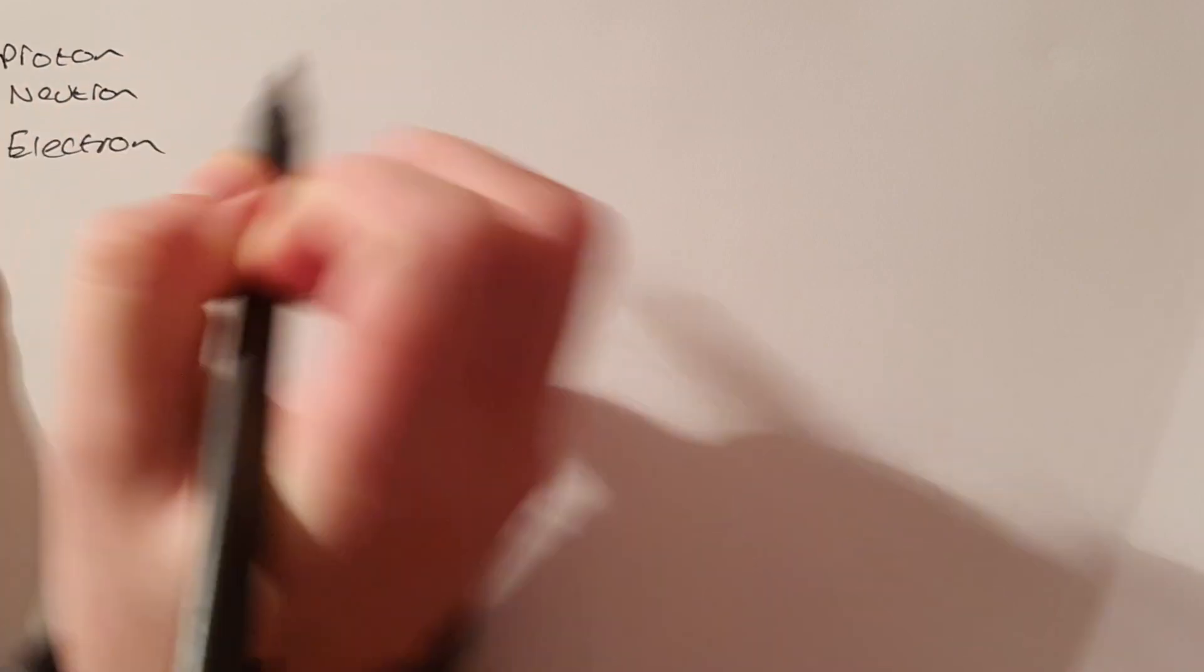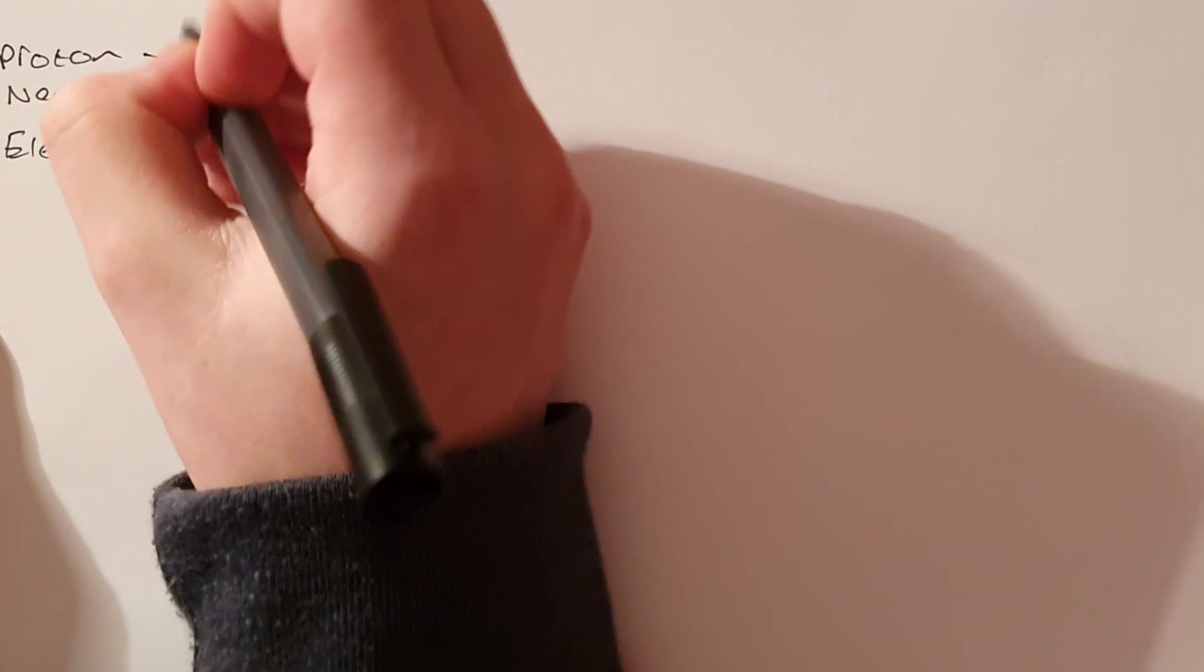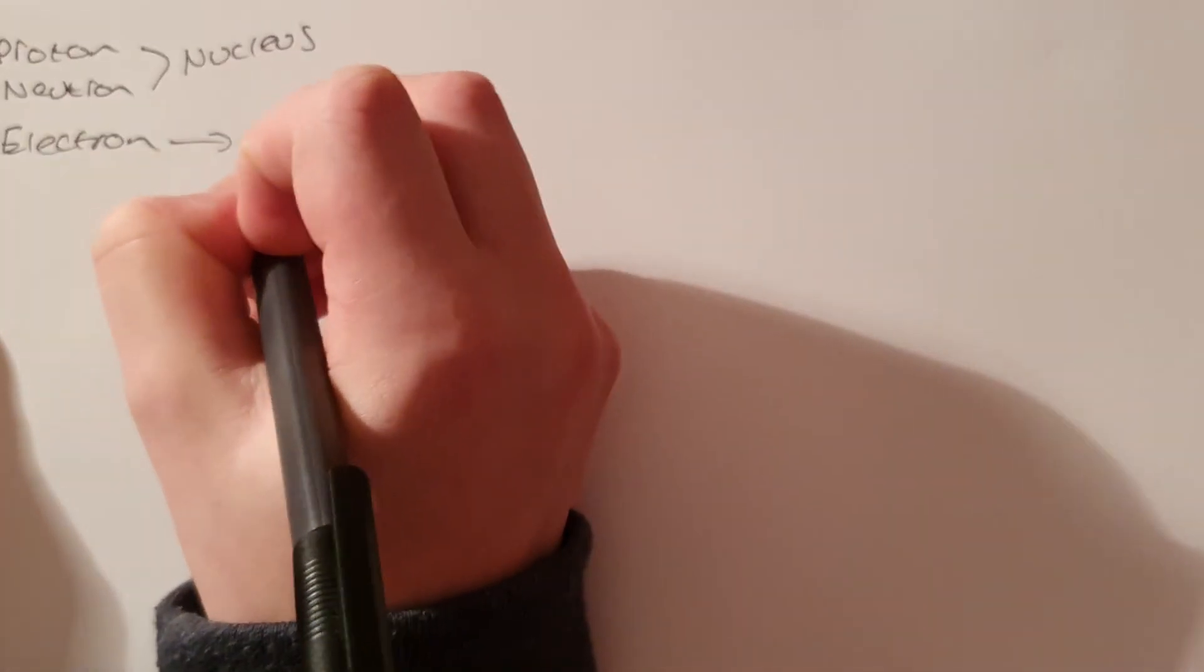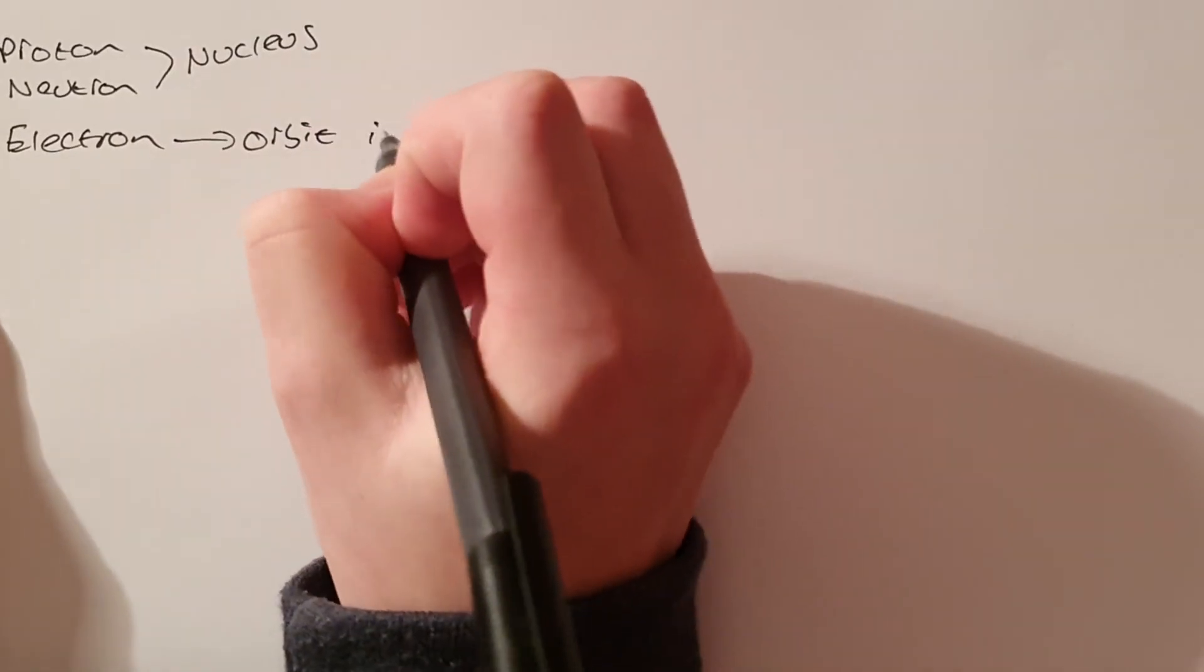We know there are three subatomic particles. We know we have the proton, the neutron, and the electron. We know from GCSE that our proton and our neutron are found inside the nucleus and we know that our electrons orbit in shells around.